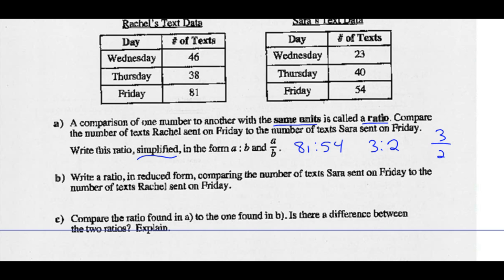Write a ratio in reduced form comparing the number of texts Sarah sent on Friday to the number of texts Rachel sent on Friday. We did Rachel to Sarah last time, so now we're doing Sarah to Rachel, so it should be 54 to 81 or 2 to 3, or as a fraction 2 to 3.